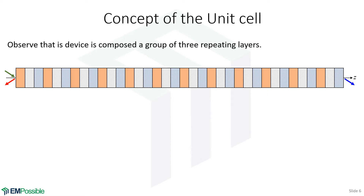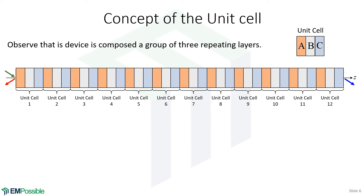Looking more carefully, we realize this stack of 36 layers is actually a set of three repeating layers. If we call those A, B, and C, we notice that three-layer block repeats throughout the structure. We call this repeating set of layers the unit cell, and we can see the device is composed of 12 different unit cells.